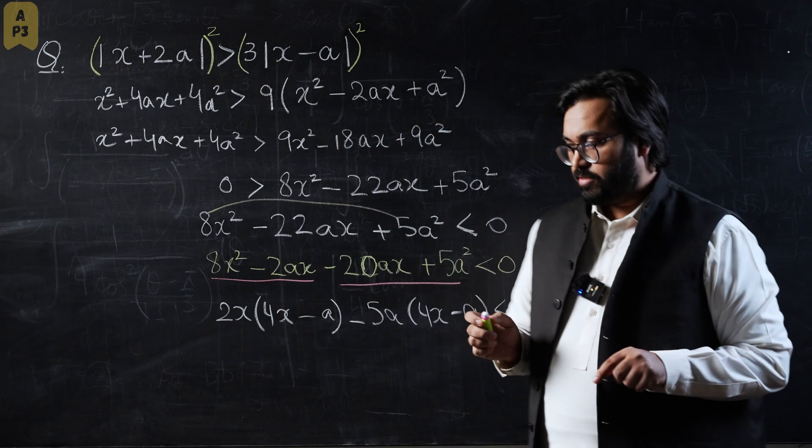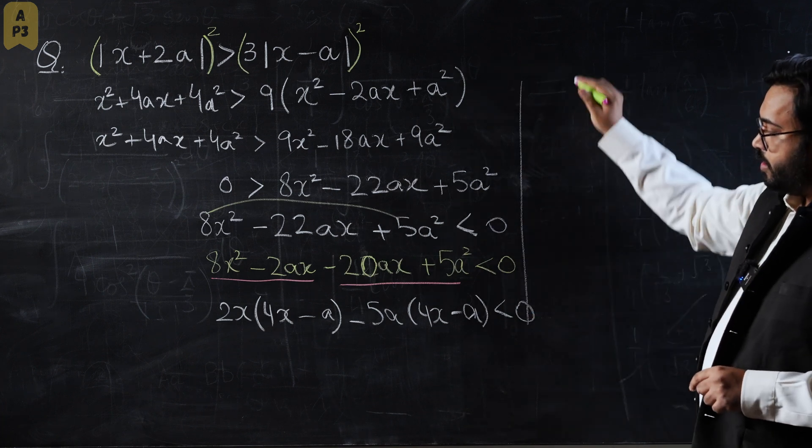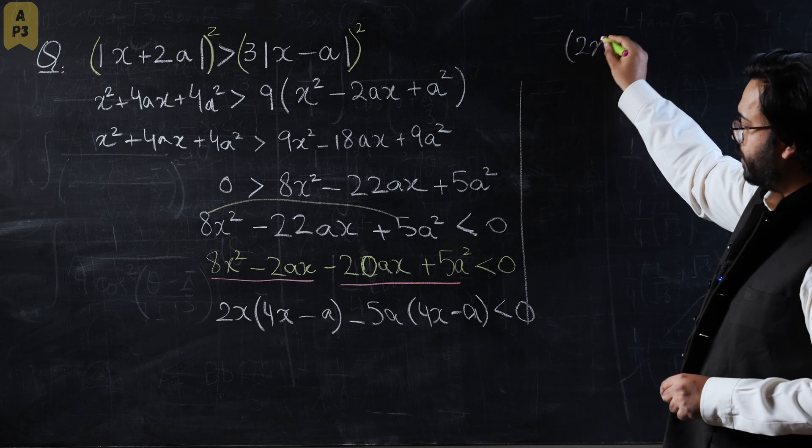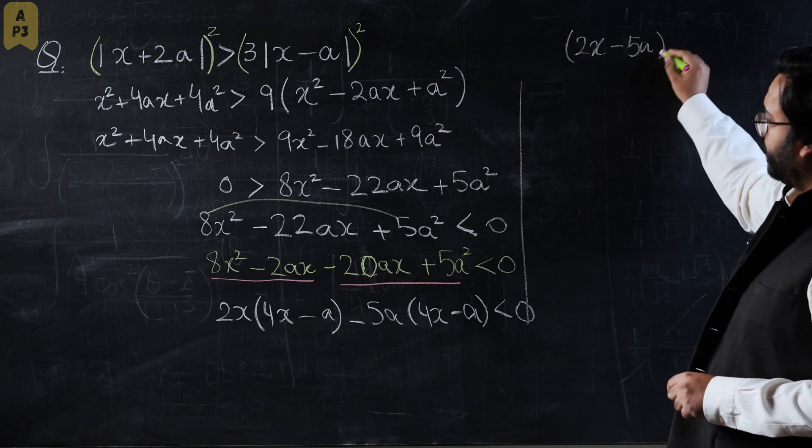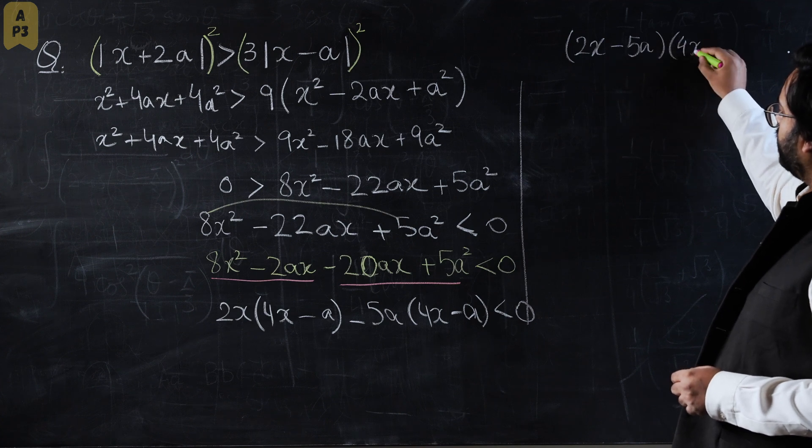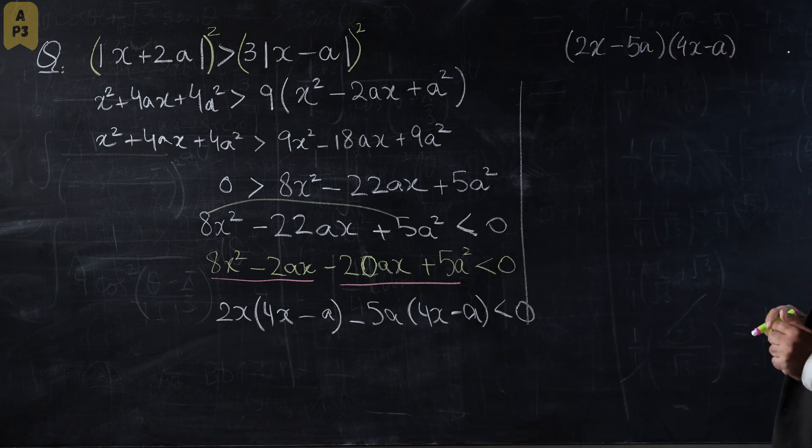This is the factorized form. Let's take it to another step. Now we have come to a factorized form: (2x minus 5a)(4x minus a), and this should be less than zero.